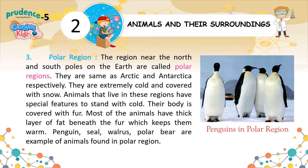Polar Region. The regions near the north and south poles on the earth are called polar regions — the same as the Arctic and Antarctica respectively. They are extremely cold and covered with snow. Animals that live in these regions have special features to withstand the cold. Their body is covered with fur, and most have a thick layer of fat beneath the fur which keeps them warm. Penguin, seal, walrus, and polar bear are examples of animals found in the polar region.